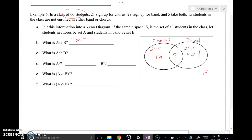So how many people are in at least chorus or band? Well, that's going to be all these folks in here. So 16 that are in just chorus, 5 that are in both chorus and band, and 24 that are in just band. 45 kids are in either chorus or band.